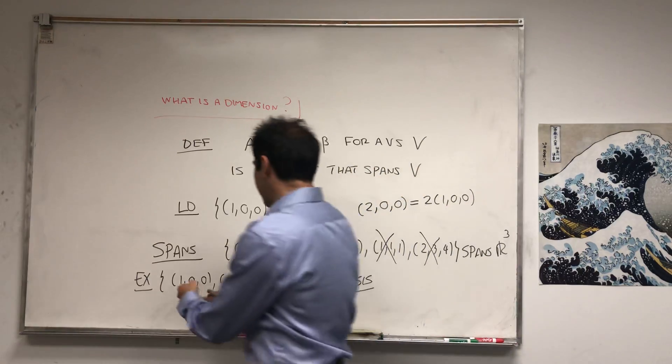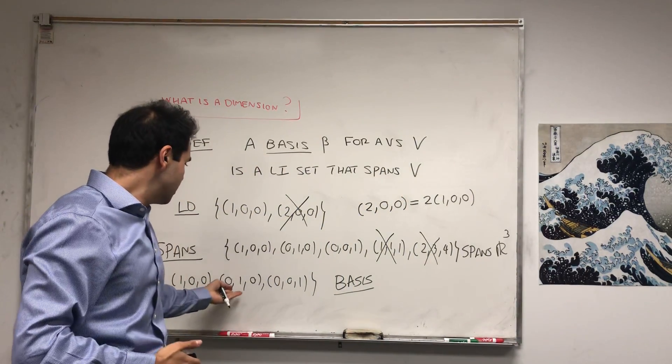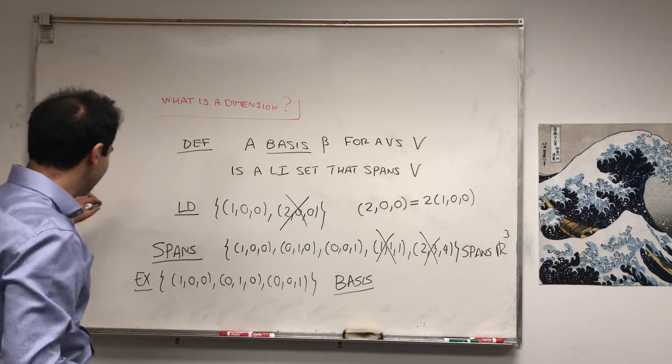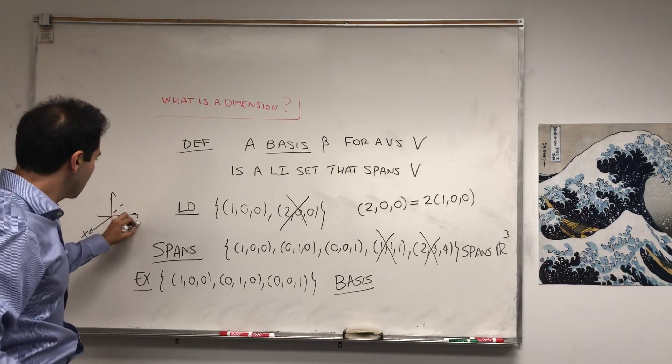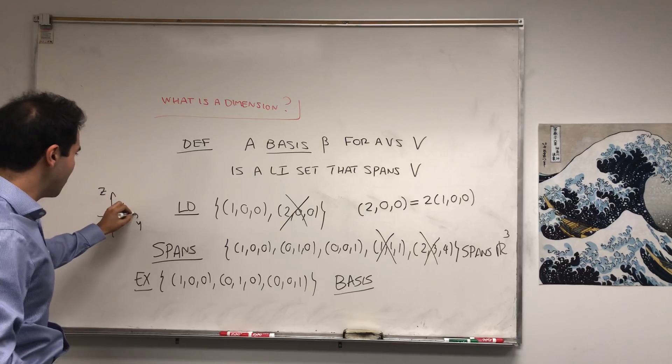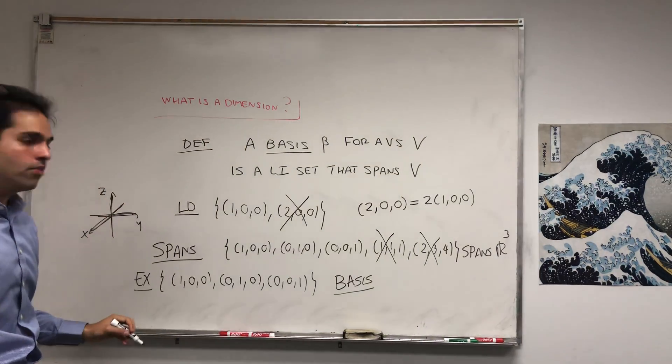And if you want, you can think of this as being the forward-backward direction, this is the left-right direction, and this is the up-down direction. In fact, this is the x, y, z plane you're used to. This is the x direction forward-backward, this is the left-right direction, this is the up-down direction.